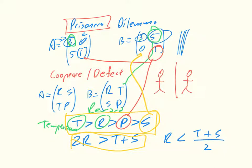Now, that kind of brings about, these inequalities bring about a couple of things. In particular, that defection always dominates cooperation.